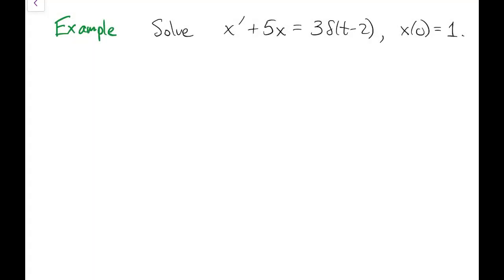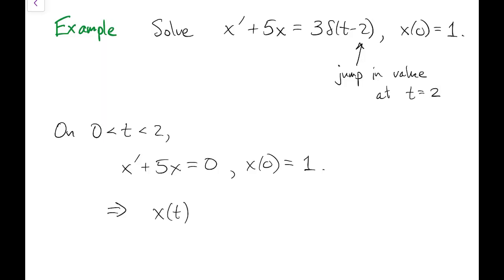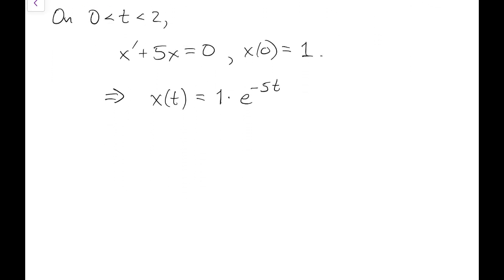Here's an example of impulse forcing. We note there will be a jump at t equals 2. Up to that time, we have a homogeneous problem with the original initial condition. The solution is just e to the negative 5t. As we approach time 2 from the left, x approaches e to the negative 10.